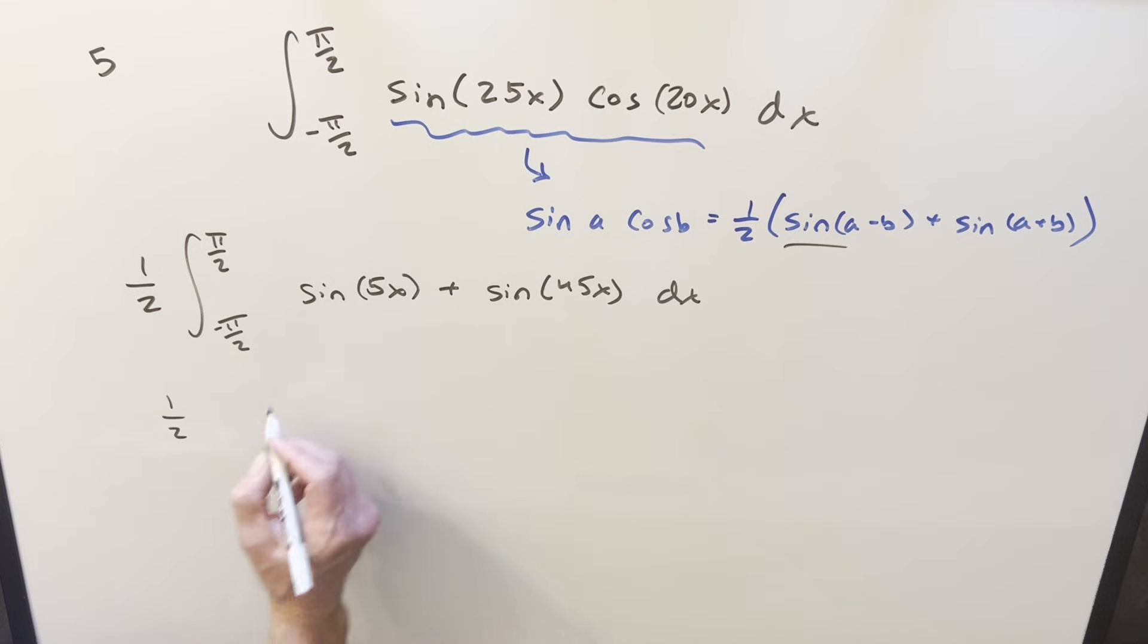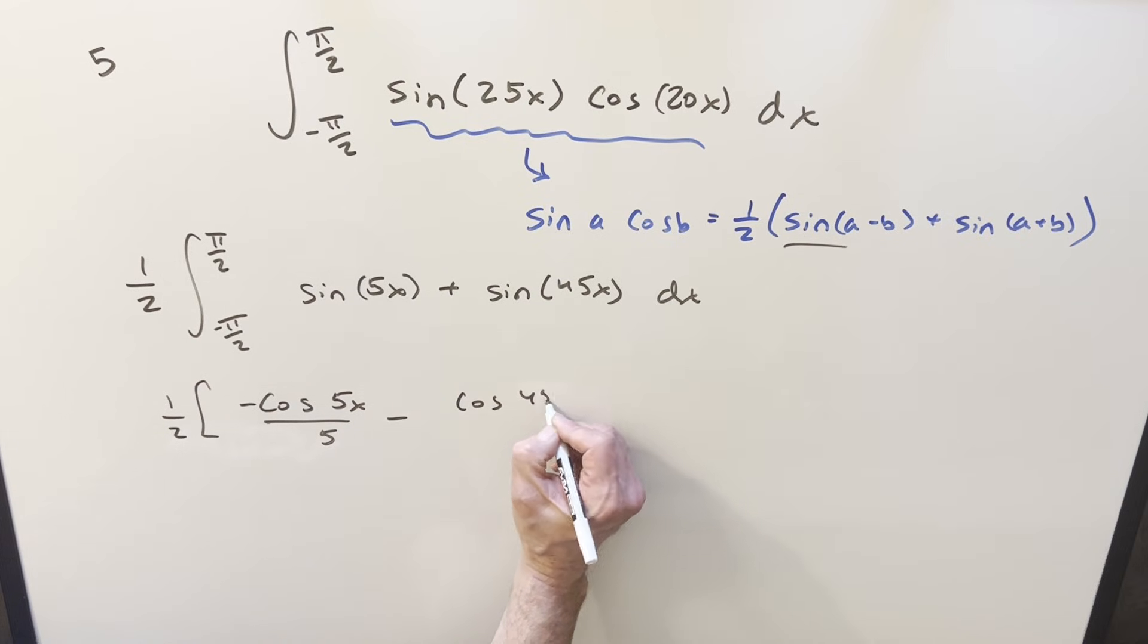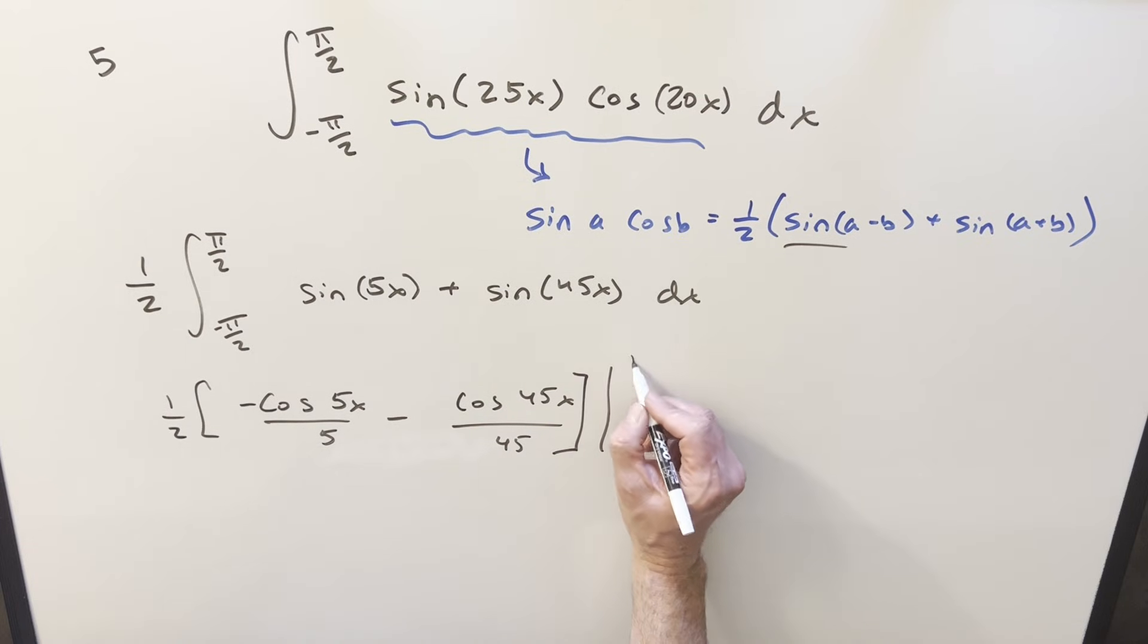I'll go ahead and integrate what's going to happen. This is going to become minus, we'll bring the one half in front of everything, minus cosine 5x over 5. This one minus cosine 45x over 45. And we just need to evaluate from minus pi over 2 to pi over 2.